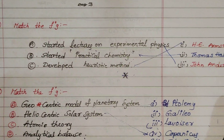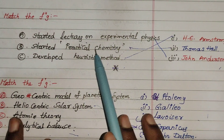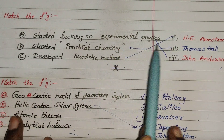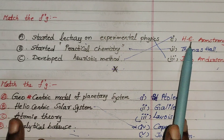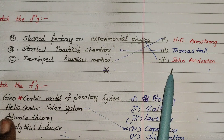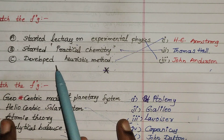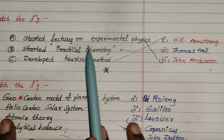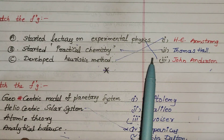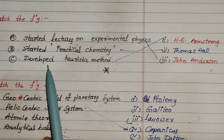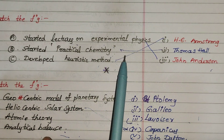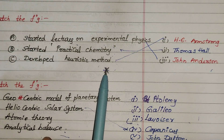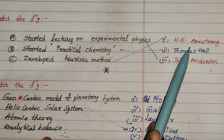14th question: Started lectures and experimental physics, started practical chemistry, developed heuristic method — same scientist name. The answer is H.E. Armstrong. Armstrong started lectures on experimental physics, started practical chemistry, and developed the heuristic method.